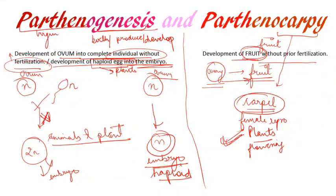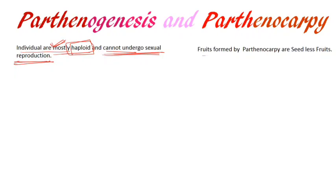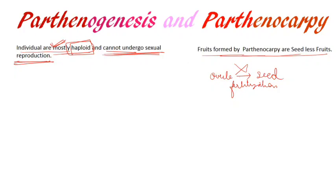The second difference: in parthenogenesis the individual formed is mostly haploid and cannot undergo sexual reproduction — note 'mostly,' because in some cases it can undergo sexual reproduction. In parthenocarpy, the fruits formed are seedless fruits. The ovules present in the ovary are normally converted into seeds after fertilization, but since fertilization does not occur in parthenocarpy, the ovules are not converted into seeds and the fruit is seedless.